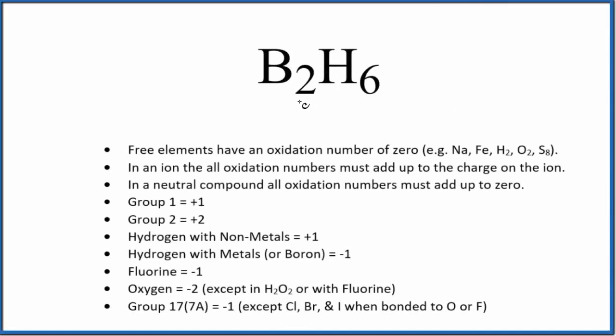Let's find the oxidation numbers for each element here in B2H6. This is diborane. The first thing you notice, there's no negative or positive after it, so this is a neutral compound. In a neutral compound, all the oxidation numbers add up to zero. That's important.